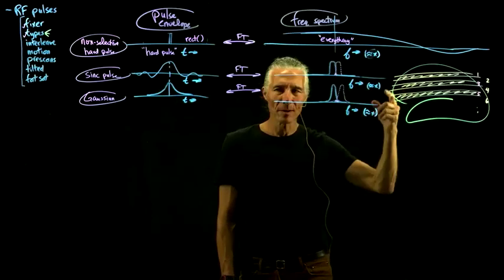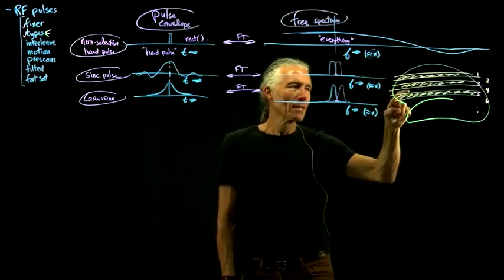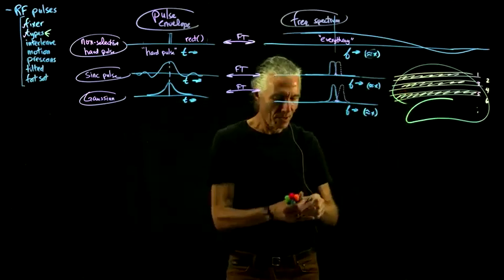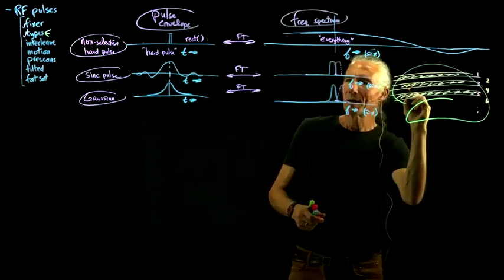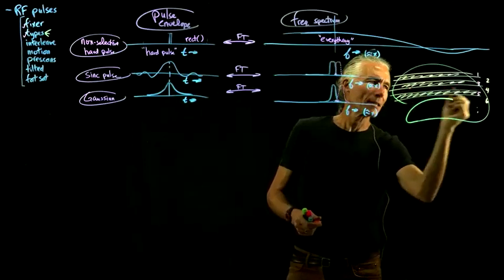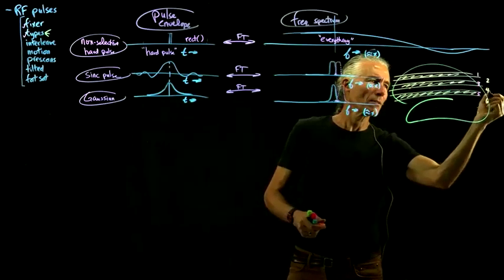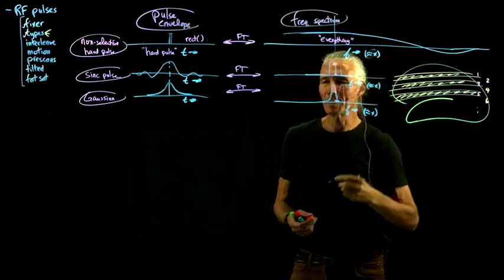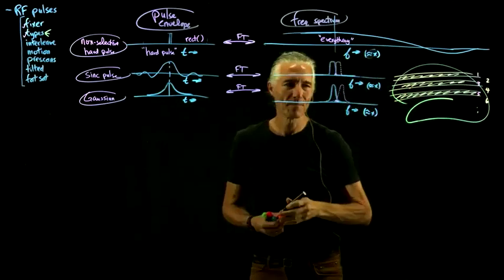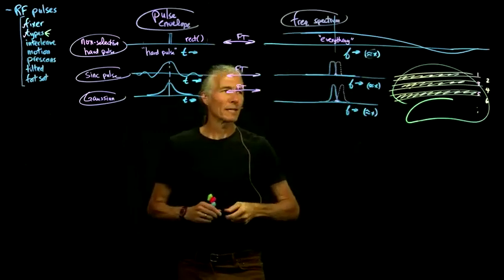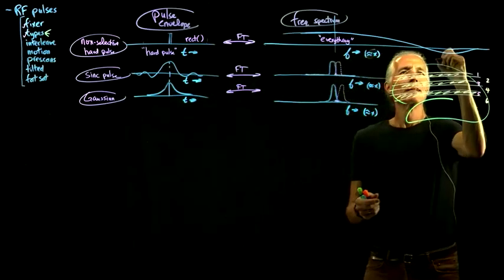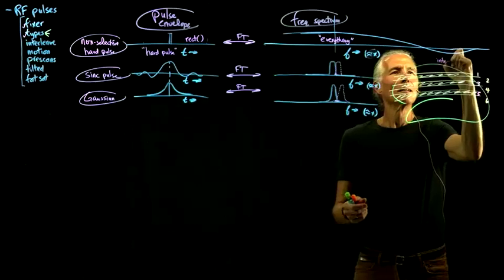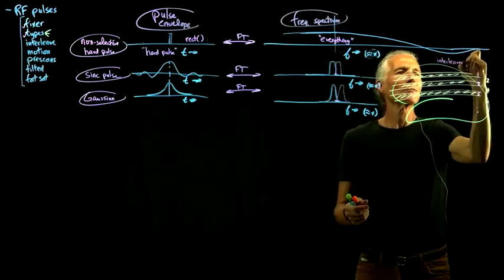So it's a pretty big increase in signal because the slices are kind of mushy at the edges. When you do this, the ones in between that you slightly went over the edge on — that's okay, because you're not going to record slice 4 until a second later, so it'll have had a chance to recover. So that's called interleaving, and if you want more signal, that's a good thing to do.